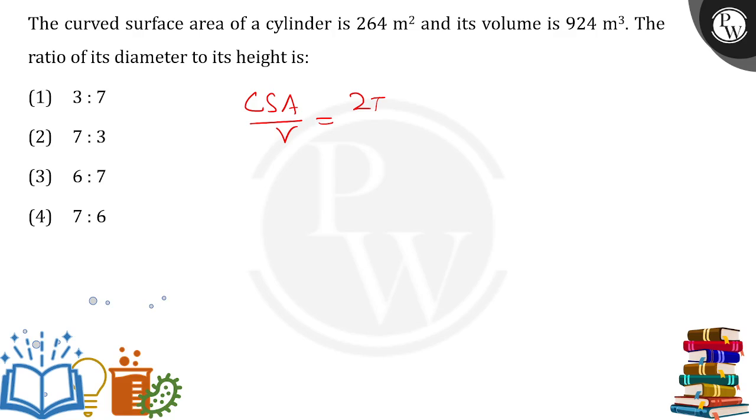The curved surface area is expressed in the ratio of diameter to its height. So rather than taking CSA by volume, I would be taking volume by CSA. Volume is πr²h and CSA is simply 2πrh.